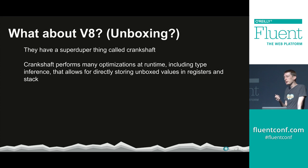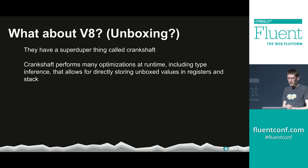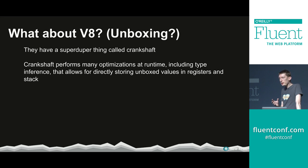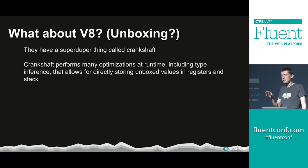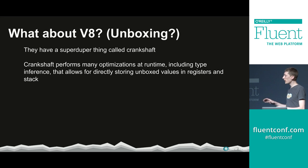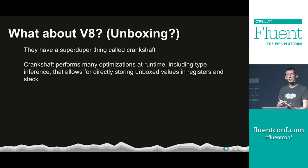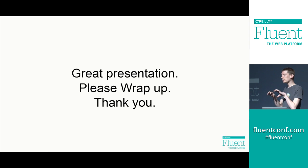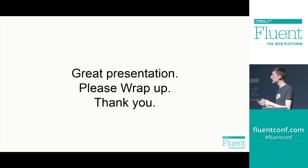What about V8, the engine in Chrome? They have a feature called Crankshaft, which covers a large part of their optimizations. One part deals with how they access primitive values — generally, Crankshaft tries to understand the code and predict where it's accessing numbers, strings, booleans, versus objects. Instead of loading memory addresses pointing to those primitives into CPU registers, it does type inference, makes assumptions, and loads those values directly without keeping them boxed in memory.